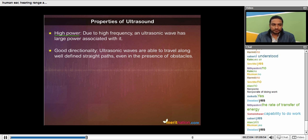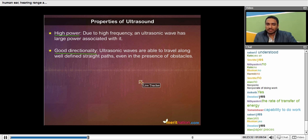And the next important property is good directionality. That is, the ultrasonic waves are able to travel along well-defined straight paths even in the presence of obstacles. That means that even if there are very small tiny particles, suppose that in the air there are lots of dust particles or something, very small particles that are present in the air, then also the ultrasound will be able to move in the straight path. That is the most important part.